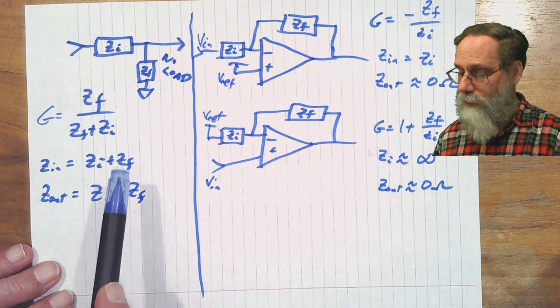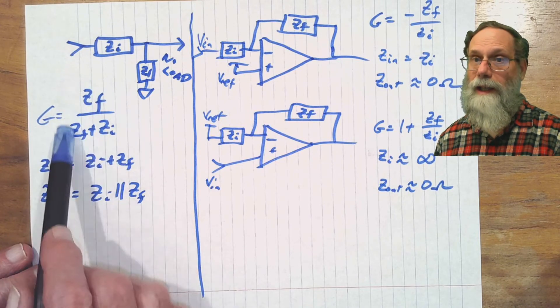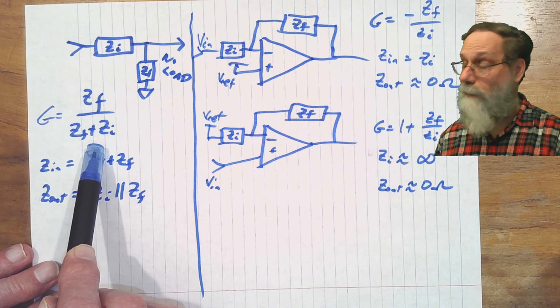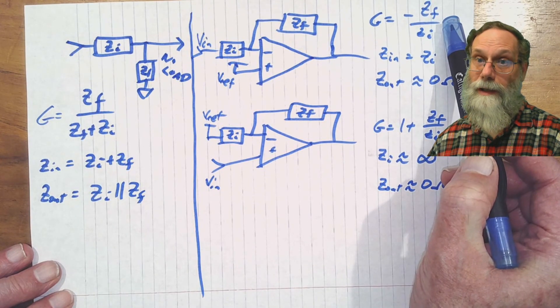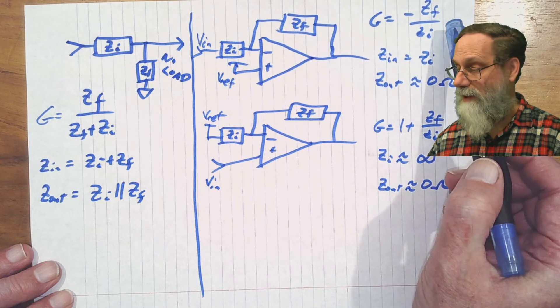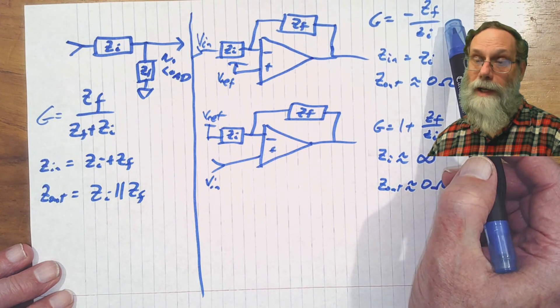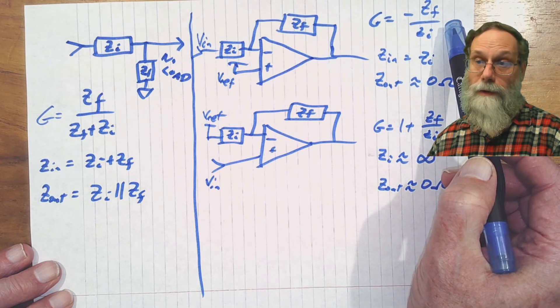Also, this function ZF over ZF plus ZI is a messier function than the minus ZF over ZI. So it's easier often to design an active filter than a passive one.